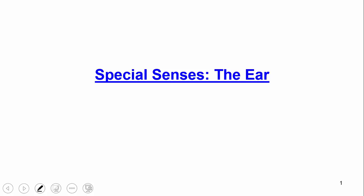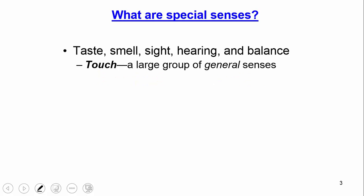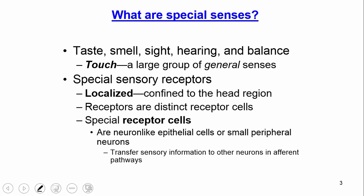In today's lecture, we're going to continue our discussion on the special senses, and today we're going to focus on the ear. Special senses include things like taste, smell, sight, hearing, and balance — things that occur in a certain localized area of the body, whereas touch is not a special sense because it's a generalized sense. You could touch things with your hands, elbows, feet, etc. Whenever we have a specialized sense, we have special sensory receptors that are very localized, confined to a particular region.